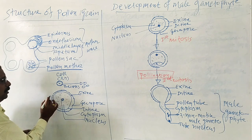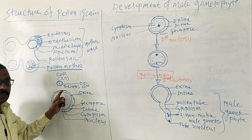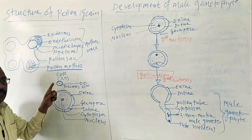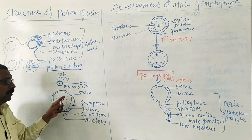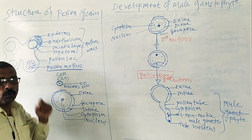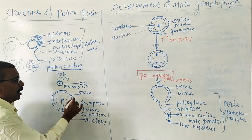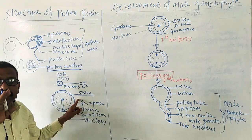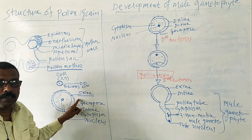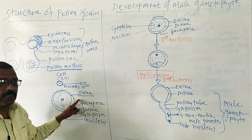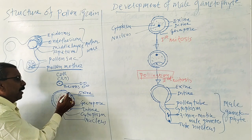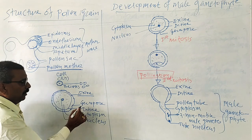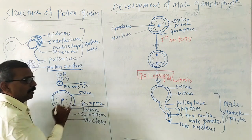Each pollen grain is a circular structure and it is covered by two layers, known as the sporoderm. The outer layer is the exine. It is generally thick and variously sculptured. The exine leaves small openings at certain thin areas, which are known as germ pores.